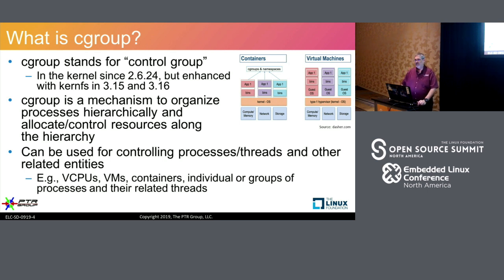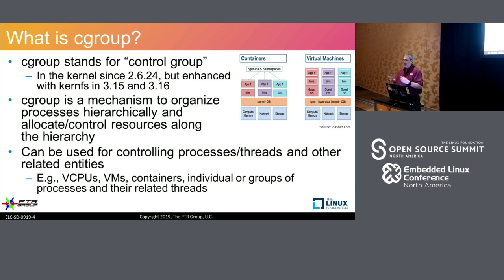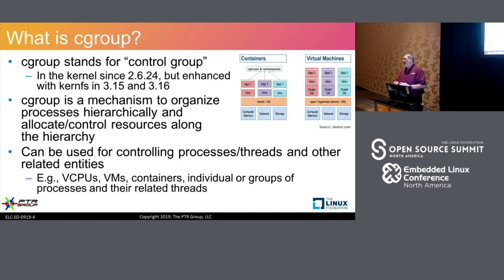What is a CGroup? It stands for control group. It was actually added to the kernel in the 2.6.24 timeframe, so it's been in the kernel a long time, but it didn't get really significant enhancement until the 3.15–3.16 kernel timeframe. It is a mechanism focused on hierarchically organizing resources across multiple applications, and it applies to any schedulable entity — containers, VMs, threads, and processes.